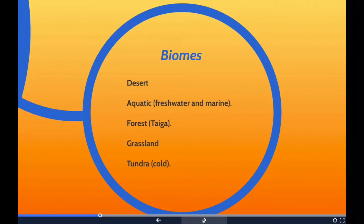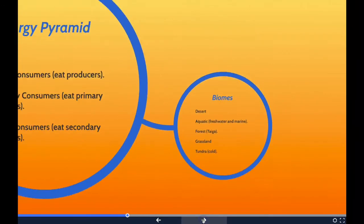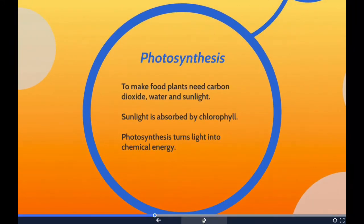Biomes play a crucial role in sustaining life on Earth. For example, the aquatic biome is home to millions of fish species and is the source of the water cycle; it also plays an important role in climate formation. The terrestrial biomes provide food, enrich the air with oxygen, absorb carbon dioxide and other harmful gases, and help regulate climate.